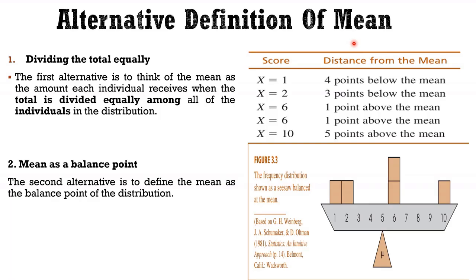Now what are the alternative definitions of a mean? The first alternative is dividing the total equally among the individuals in the distribution. So the amount that each individual receives when the total is divided equally among the individuals in the distribution is the first alternative.